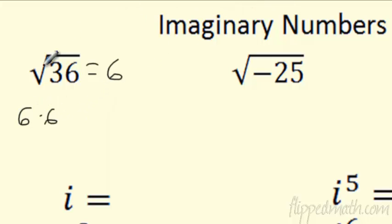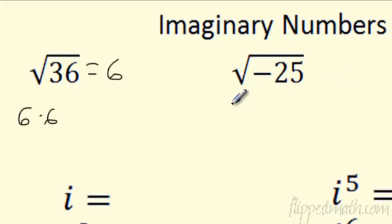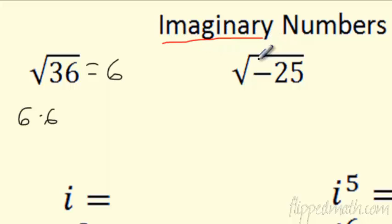Those are real numbers. What happens is, in the past you typed this in your calculator — the square root of negative 25 doesn't exist. It says non-real answer. It's true. These are not real answers. But we have imaginary answers. So these are called imaginary numbers.